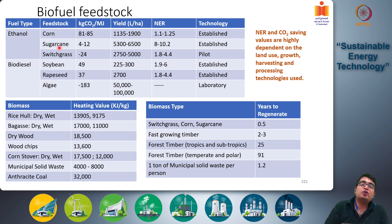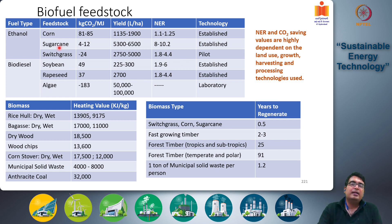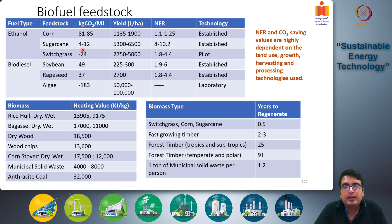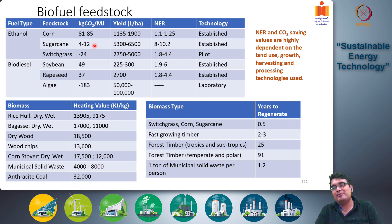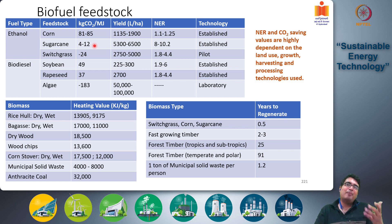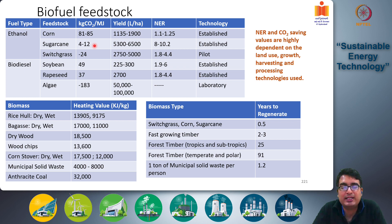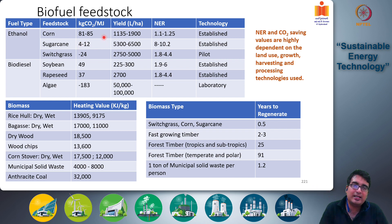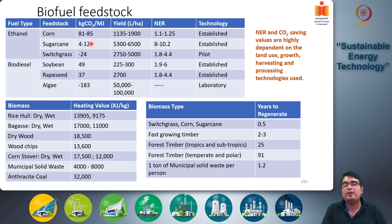If you switch your feedstock to sugarcane-based ethanol — fermenting sugarcane juice to produce ethyl alcohol — the CO2 emitted for the entire process of sugarcane growth, harvesting, and conversion to ethanol is significantly lower, around 4 to 12 kg of CO2 per megajoule of energy. This has been achieved in countries like Brazil because sugarcane is easier to grow, has higher yields, and the waste from sugarcane processing can be burnt to supply the thermal energy requirements of ethanol production itself.